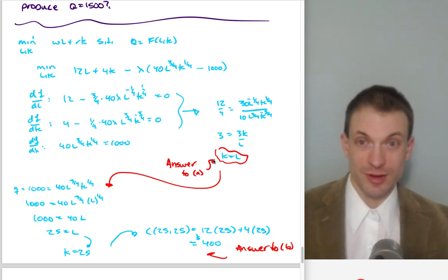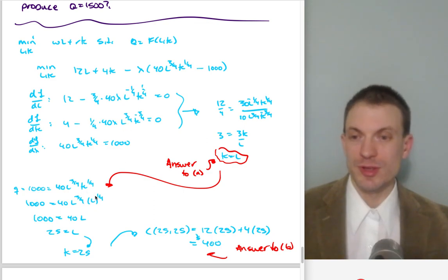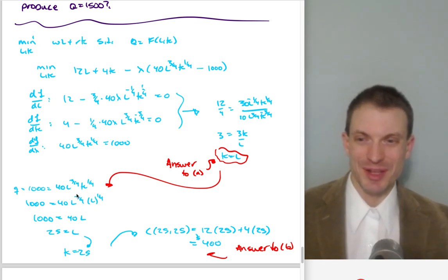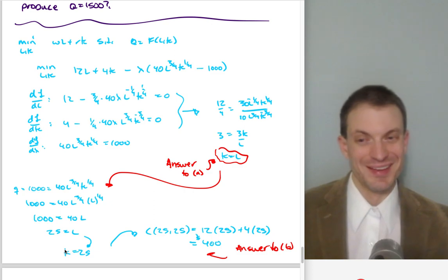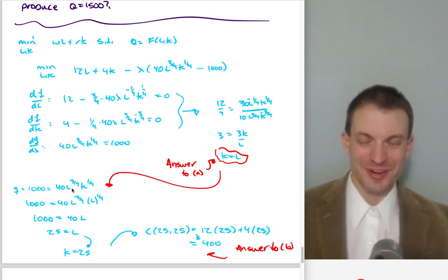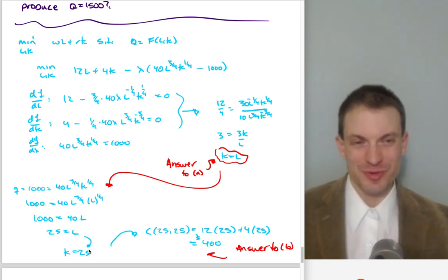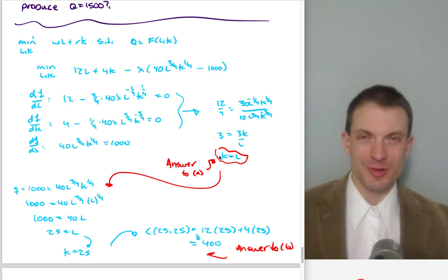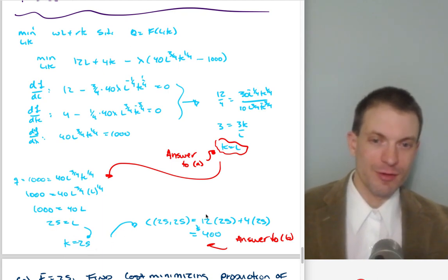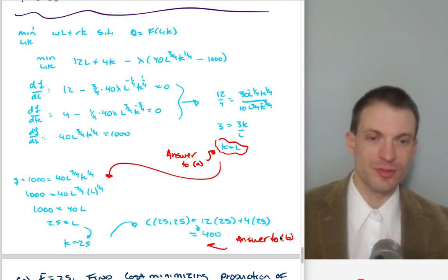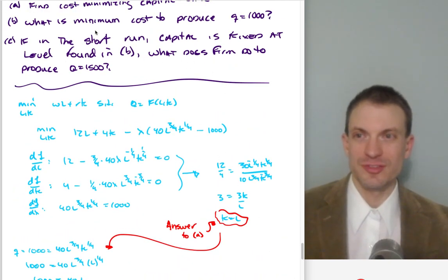With K = L, we plug into the constraint for 1,000 units. Substituting K for L, we solve to get L = 25 and K = 25. The total cost is 12·25 + 4·25 = $400. So the minimum cost to produce 1,000 units is $400, using 25 units of labor and 25 units of capital.